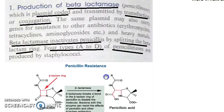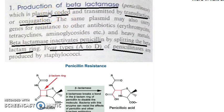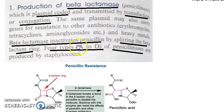This beta-lactamase property is coded by the plasmid, and it is transmitted from one bacterium to another by transduction or conjugation. Staphylococci can produce four types of these beta-lactamases.